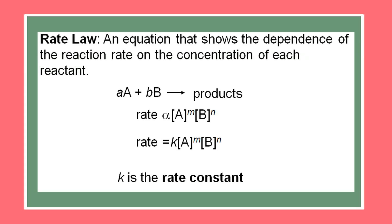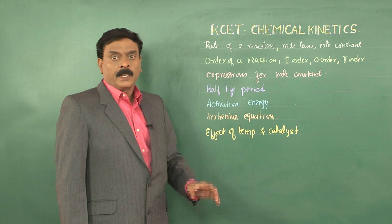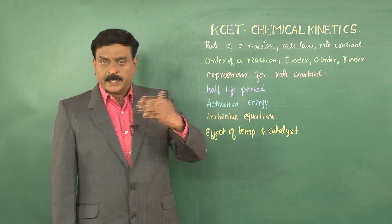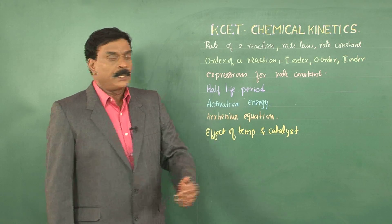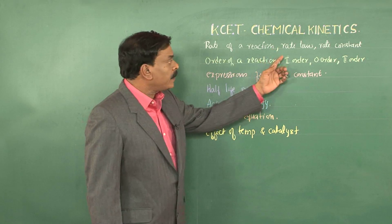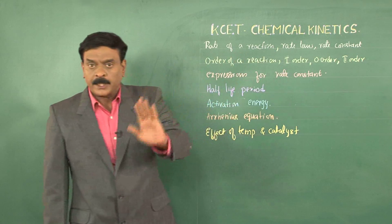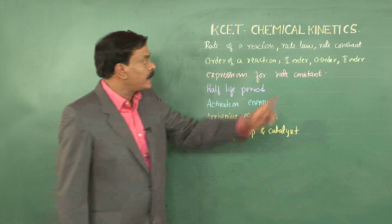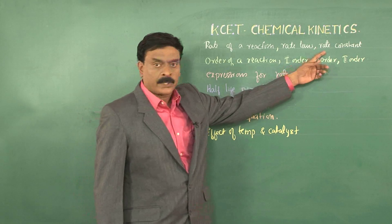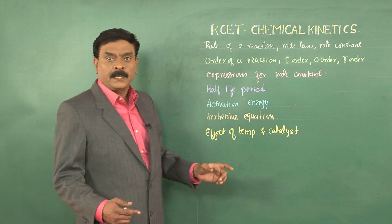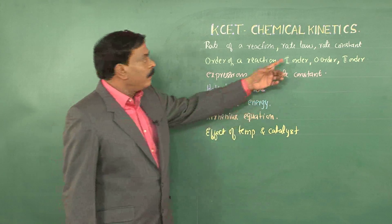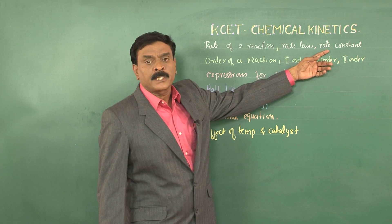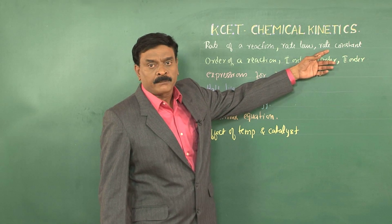Coming to the rate constant: when you relate the rate of the reaction to the concentrations of the reactants, you get a constant which is called the rate constant. In the next part, depending on the question, I will be discussing the features of the rate constant of a reaction.